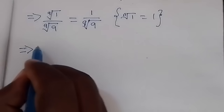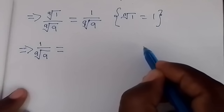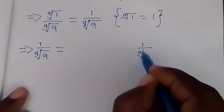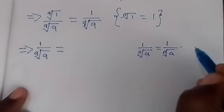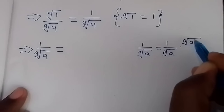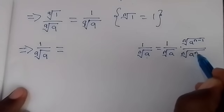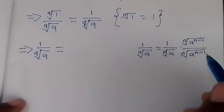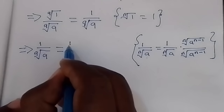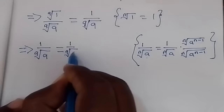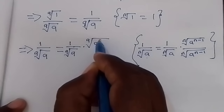Here we have 1 over the 9th root of 9. We apply the rule that 1 over the nth root of a is the same as 1 over the nth root of a, times the nth root of a raised to power n minus 1, over the nth root of a raised to power n minus 1.